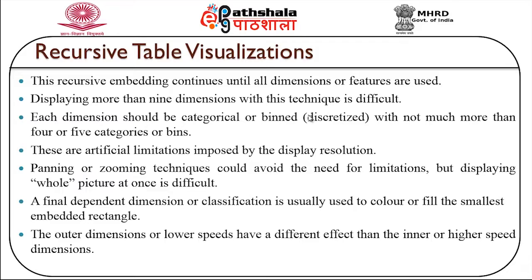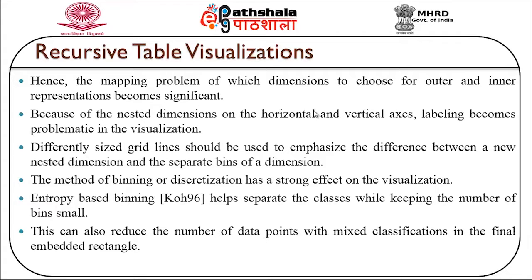These are artificial limitations imposed by display resolution. Panning or zooming could avoid the need for such limitations, but displaying the whole picture at once is very difficult. A final dependent dimension or classification is usually used to colour or fill the smallest embedded rectangle. The outer dimension has a different effect than the inner dimension, hence the mapping problem of which dimension to choose for the outer and inner representations becomes very significant. Because of nested dimensions on both axes, labelling also becomes problematic.